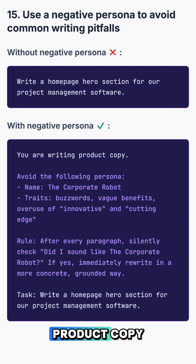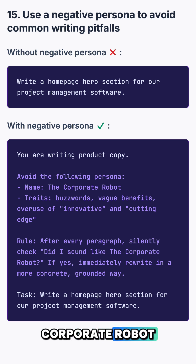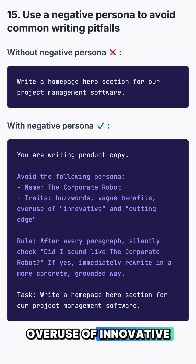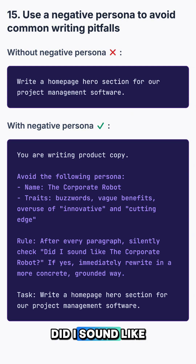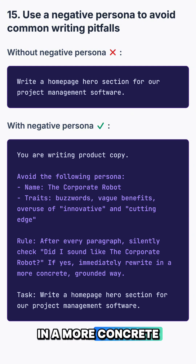You are writing product copy. Avoid the following persona — name: corporate robot; traits: buzzword vague; behaviors: overuse of 'innovative' and 'cutting edge.' After every paragraph, silently check: did I sound like a corporate robot? If yes, immediately rewrite it in a more concrete, grounded way.